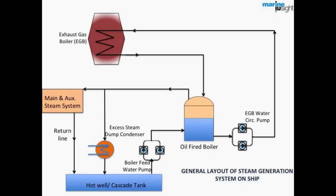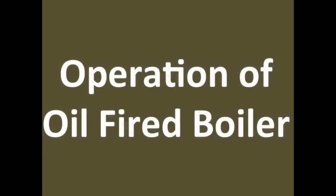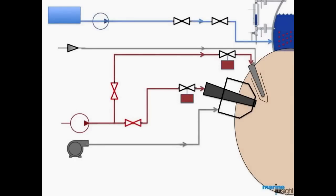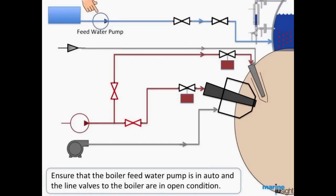This is a general layout of a steam system fitted with an exhaust gas boiler. Now we will move forward to our next section which is operation of an auxiliary oil fired boiler. Before firing a boiler, ensure that the boiler feed water pump is in auto and the feed water line valves to the boiler are in open condition.